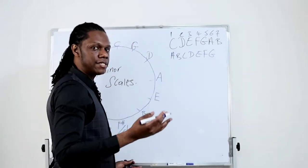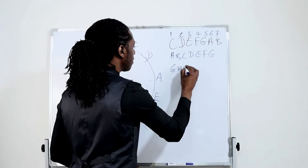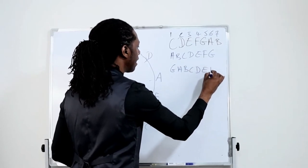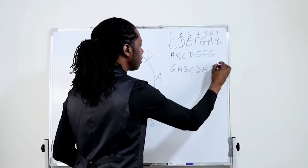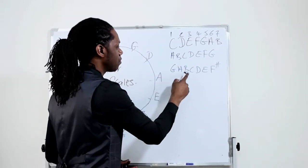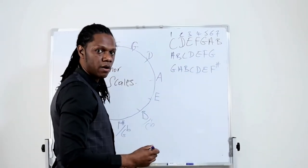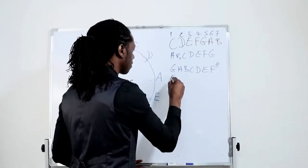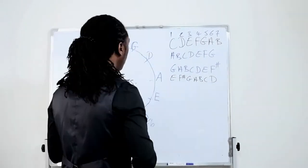G major: to get the relative minor, you do the same. G, A, B, C, D, E, and F sharp. Then you go to the sixth degree of the scale — one, two, three, four, five, six. So now it is E minor. We're going to go E, and that is your E minor.